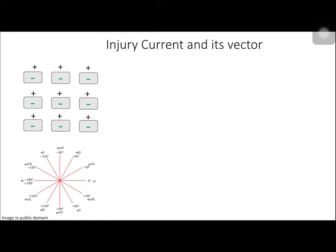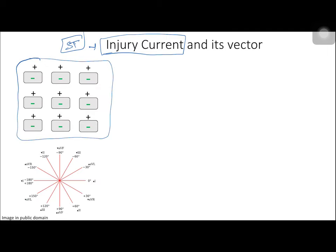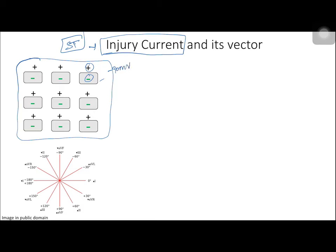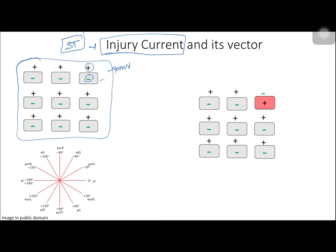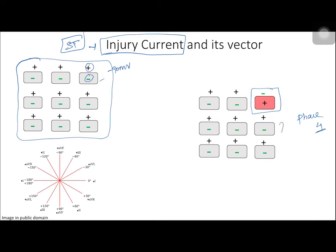To understand what happens to the ST segment when myocardium is injured, we need to understand the concept of injury current. These gray cells represent normal myocardium — all cells are at resting membrane potential, inside negative and outside positive, at minus 90 millivolts. Since this is electrically homogeneous, no current flows between cells. But if a cell or group of cells is injured and depolarized, even while other cells remain at resting membrane potential, a potential difference is created and a current flows from negative to positive.